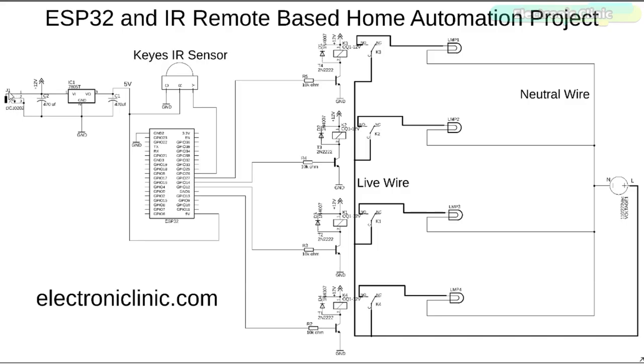J1 is the DC female power jack and this is where we connect a 12 volt adapter, battery or a solar panel. Two 470 microfarad capacitors are connected at the input and output sides of the voltage regulator.